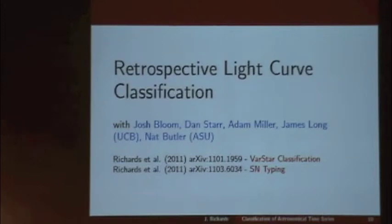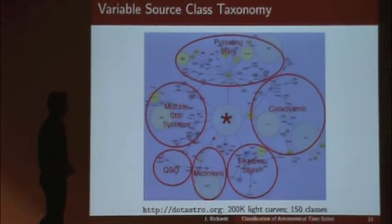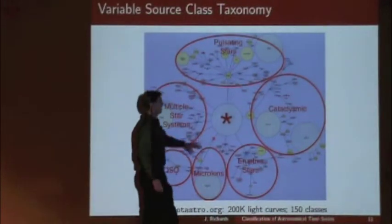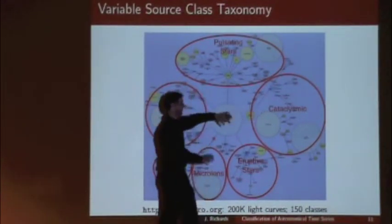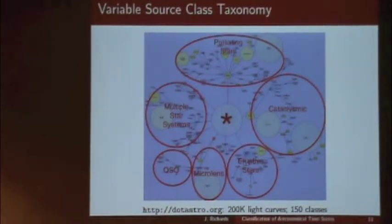That shows some of the real-time classification we've worked on. Another big question is retrospective light curve classification. As we get more time series information about an object, instead of classifying supernova versus everything else, we might want to go deeper into this classification taxonomy. This gives you a sense of 150 types of variable classes for astronomical data — it's quite complicated with a lot of stuff going on out there. As we get more information, maybe we can have a finer taxonomy.